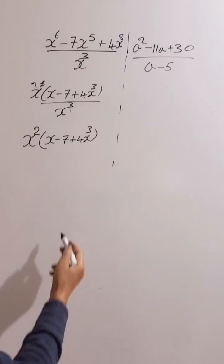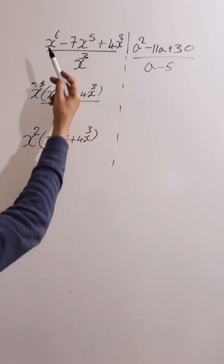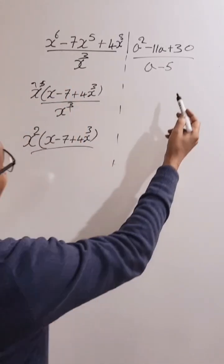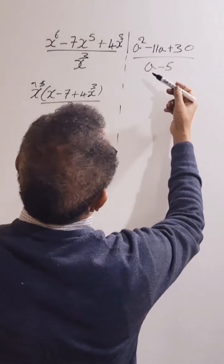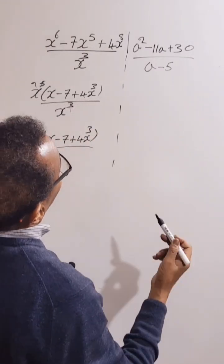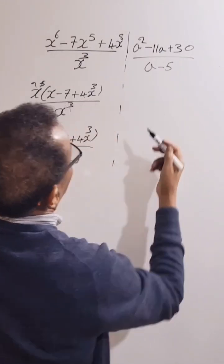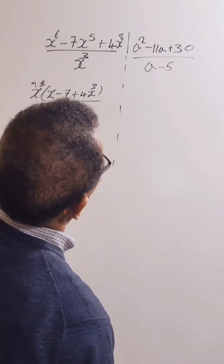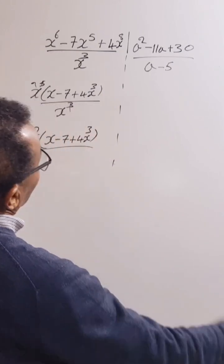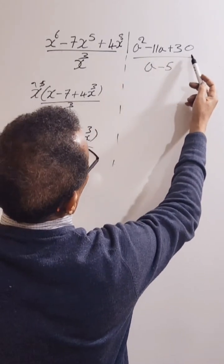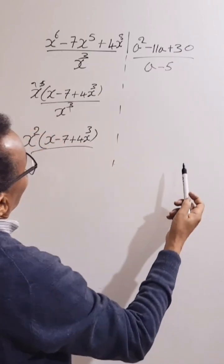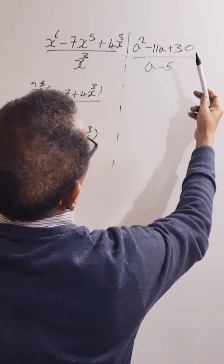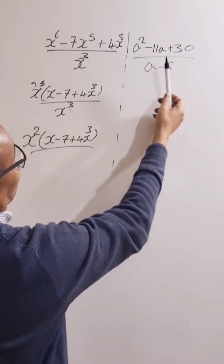Okay, let's do this one. a squared take away 11a plus 30, over a take away five. Let's factorize this one. We need two numbers that multiply to 30 and add to 11.